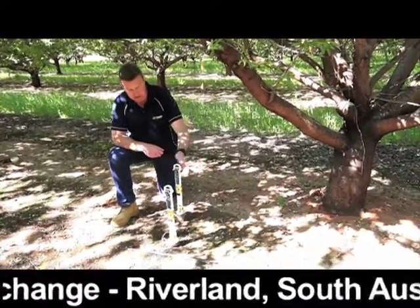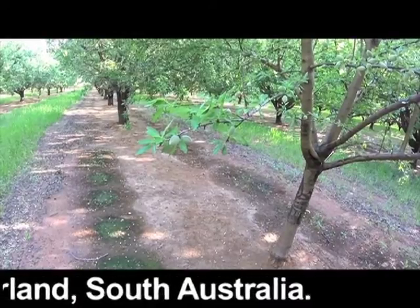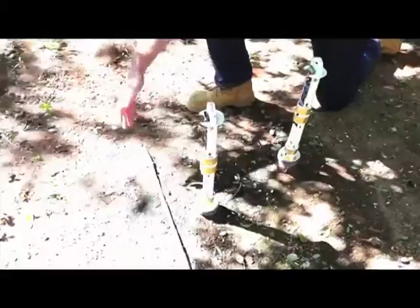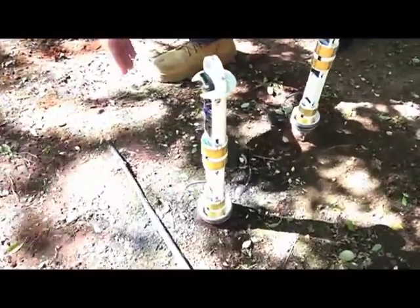The drip system has two laterals, one each side of the tree, approximately a metre apart, out from the tree. There's an emitter every 600 mil along the drip line here.